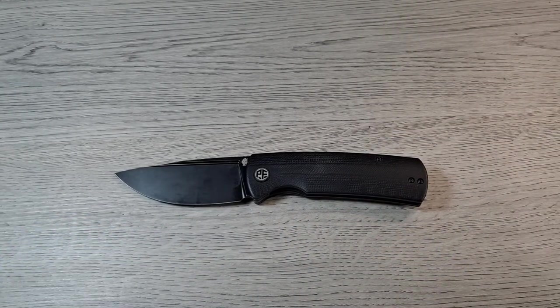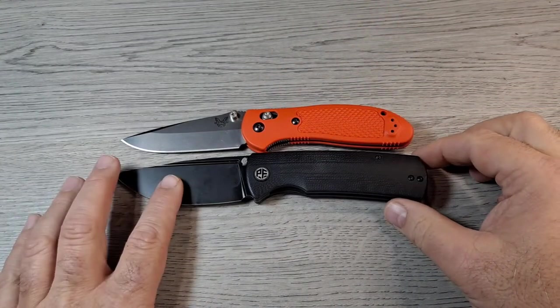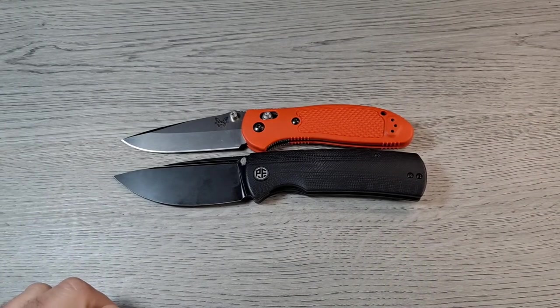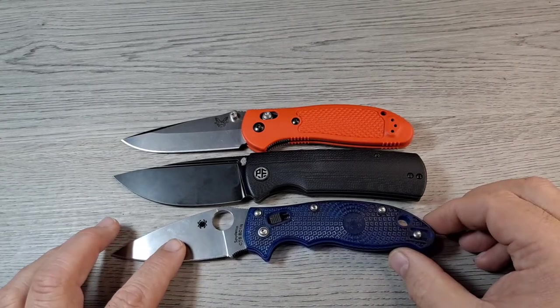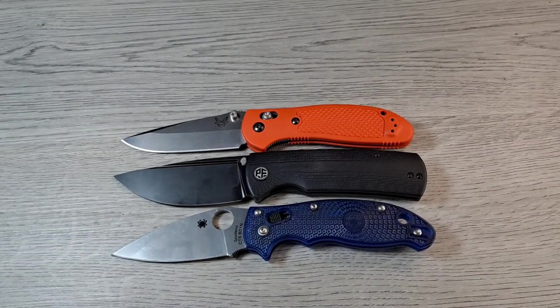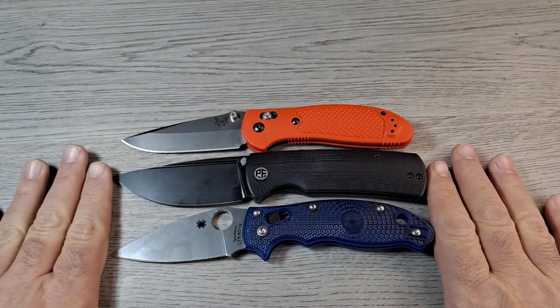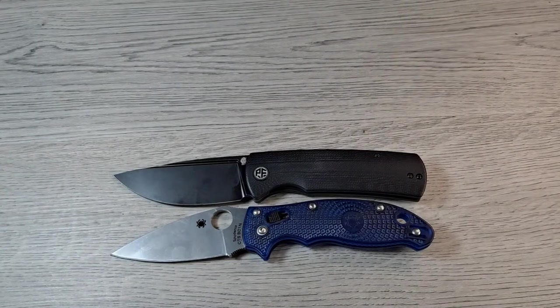Blade HQ Reptilian, pretty close. The Beluga goes a little bit longer. Spyderco Manix 2, they are pretty close. They're almost spot on overall length.